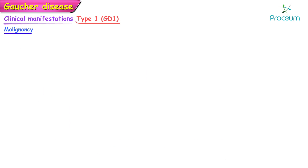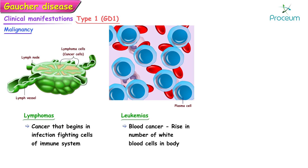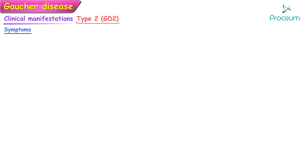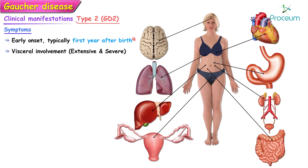There are increased rates of malignancies, particularly hematologic malignancies such as lymphomas, leukemias, and multiple myelomas, in patients with Gaucher's disease. Type 2 Gaucher's disease is characterized by early onset, typically occurring in the first year after birth, with more extensive and severe visceral involvement.